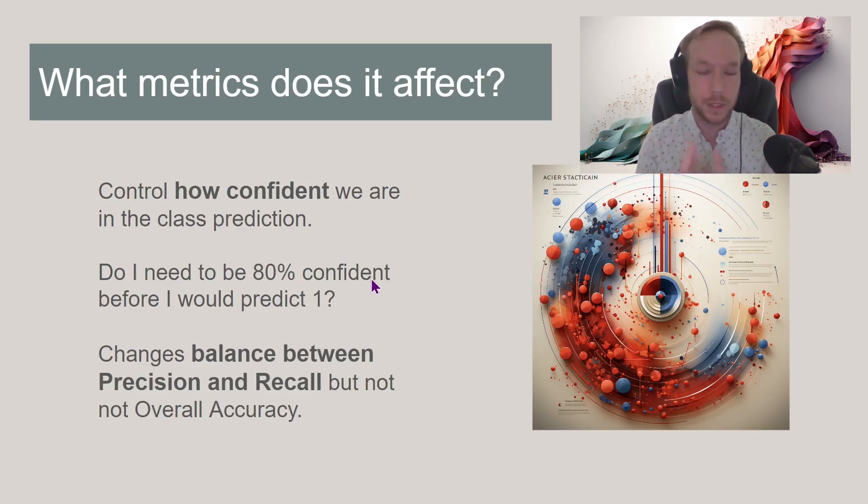So what does the discrimination threshold affect? This is really affecting the confidence in a prediction. So if you're more confident in a prediction, you're going to get more of those right.